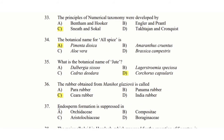37th question: Androsporogenesis is sub-present in — option A: Orchidaceae, option B: Compositae, option C: Aristolochiaceae, option D: Boraginaceae. The answer is option A: Orchidaceae.